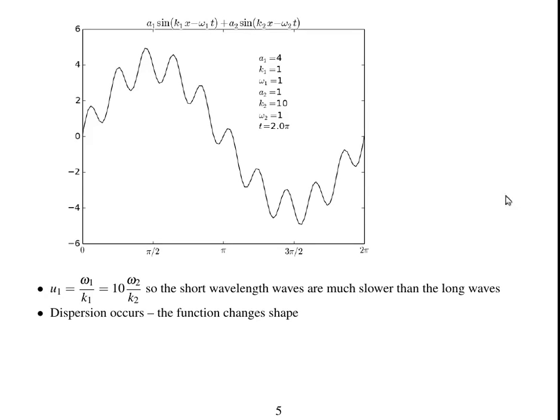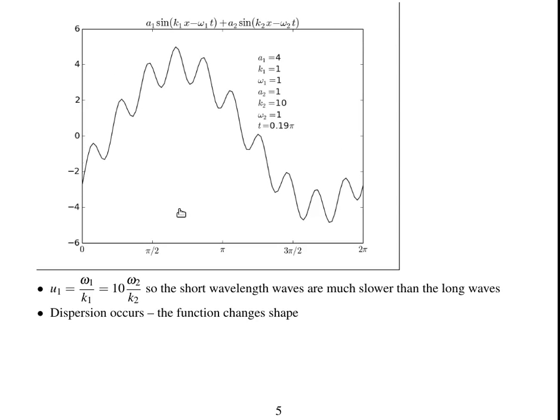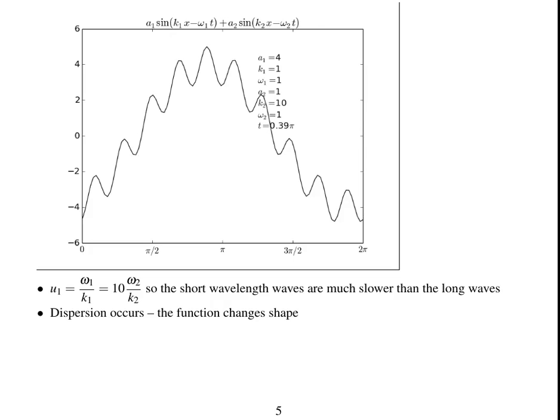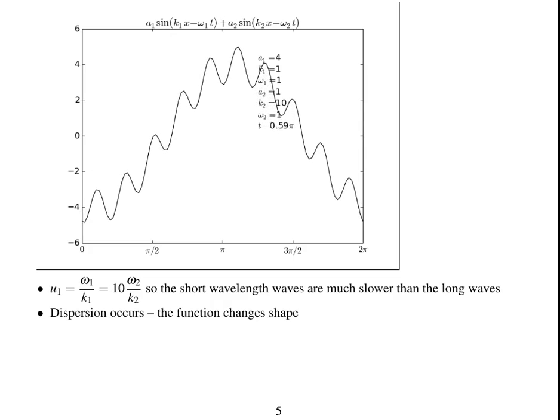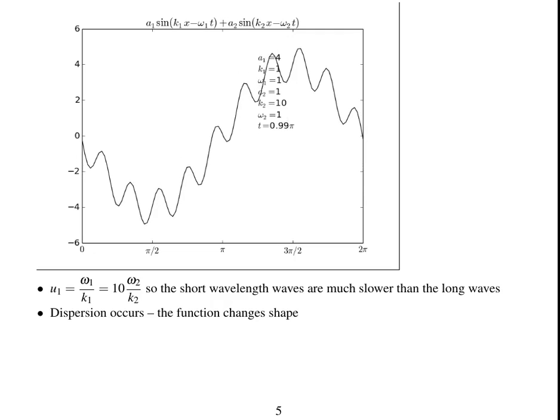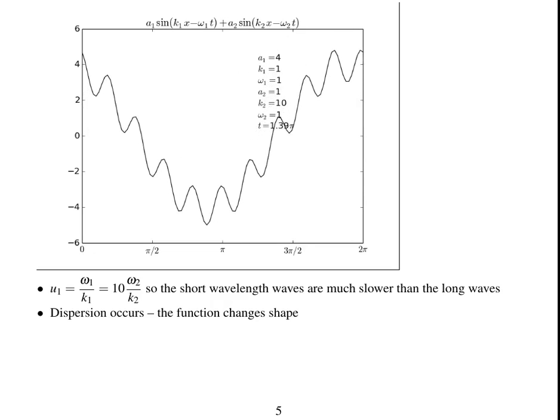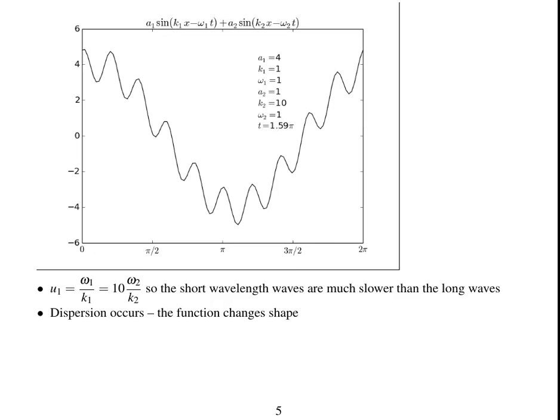Now I've increased, I've changed the frequency of the high wave number waves, so it's just 1. So now the wave speed for both of them is not the same. So this wave is dispersive. The short wavelength waves are much slower than the long wavelength waves. It looks as if they're stationary and the long wavelength wave is going up and down underneath them. So this is a dispersive wave.